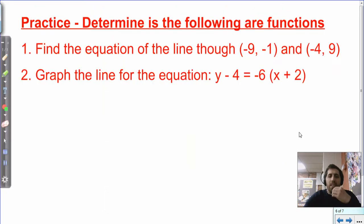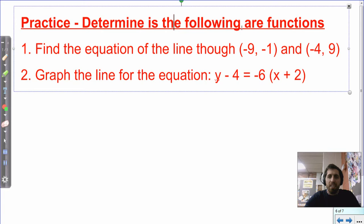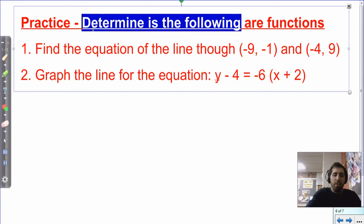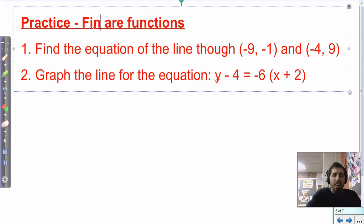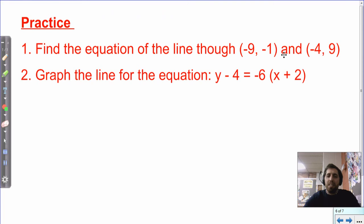I'm going to leave you with some ones that are a little more basic, and here they are. Find the equation of the line through negative 9, negative 1, and negative 4, 9. And these are not the instructions. And that's not even correctly worded. So what you should do is, yeah, I'm just going to leave it. Find the equation of the line through negative 9, negative 1, and negative 4, 9. Do that in point-slope form. And then graph the line for the equation. Y minus 4 equals negative 6 times the quantity of X plus 2. Best of luck, practice that point-slope form, and I'll see you.